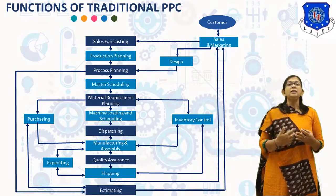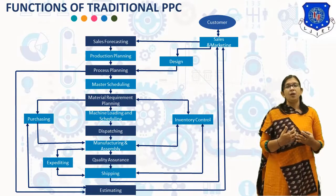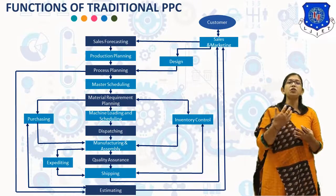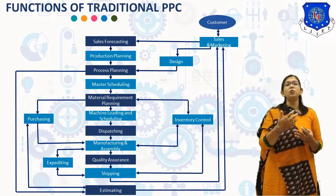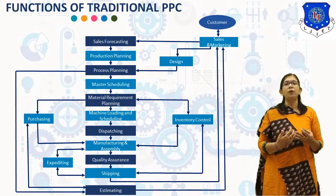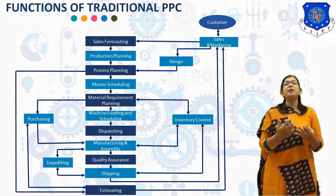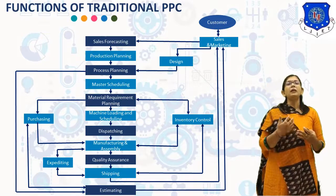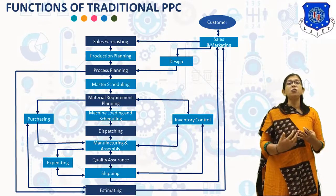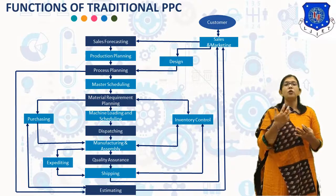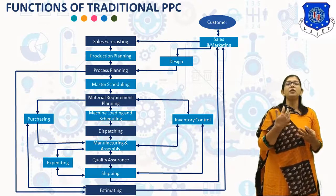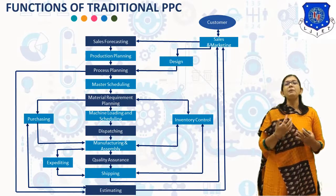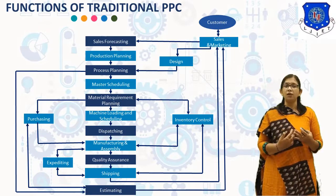The next step is Material Requirement Planning, which is a function that converts the Master Schedule into a detailed schedule for the procurement of raw materials and vendor-manufactured components. It defines the quantities of each raw material and vendor-manufactured component, and also defines the timing of placing orders and delivery. Material Requirement Planning helps in purchasing the material and inventory control.